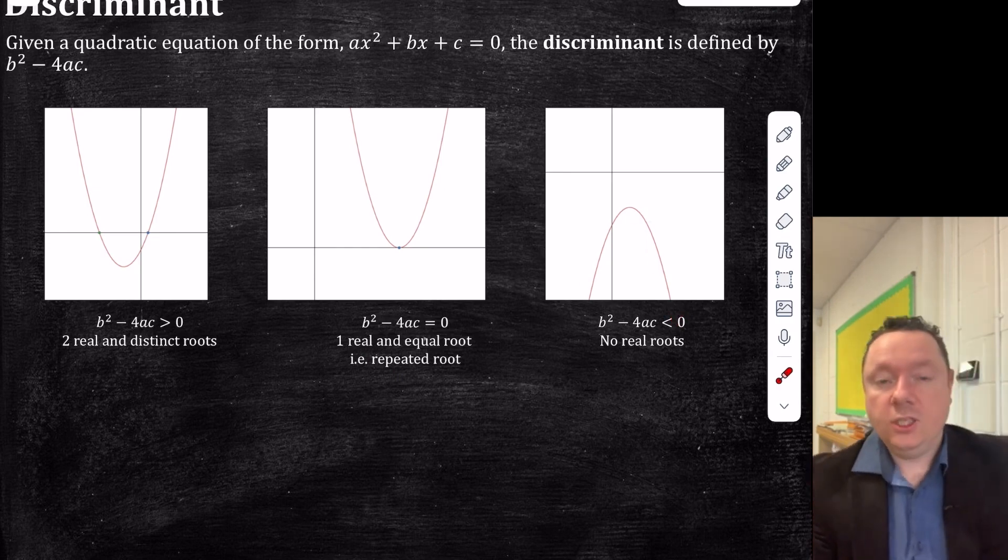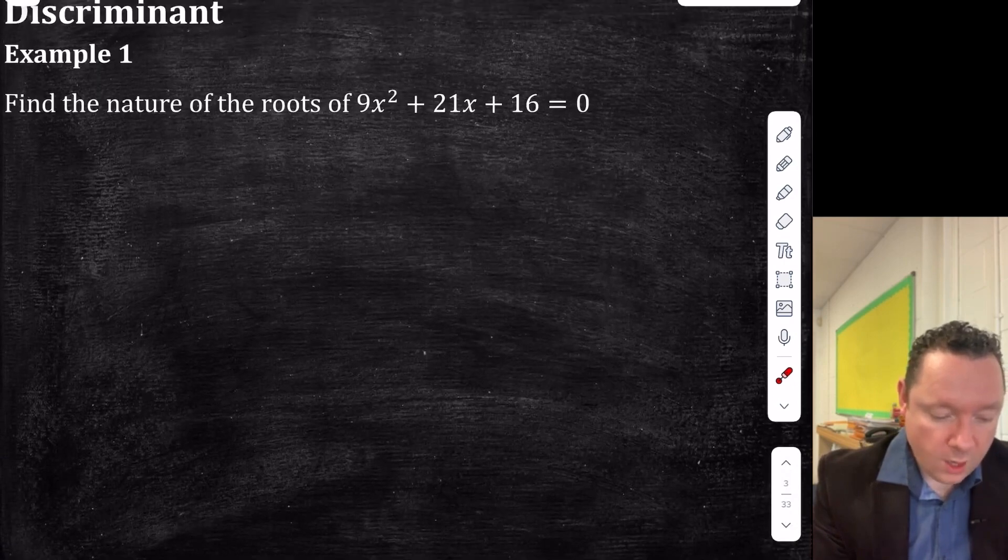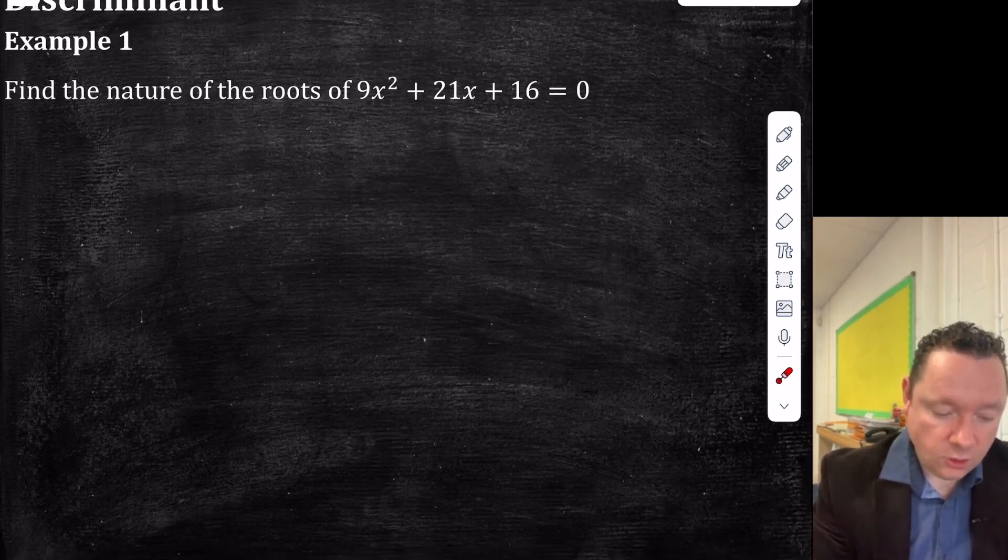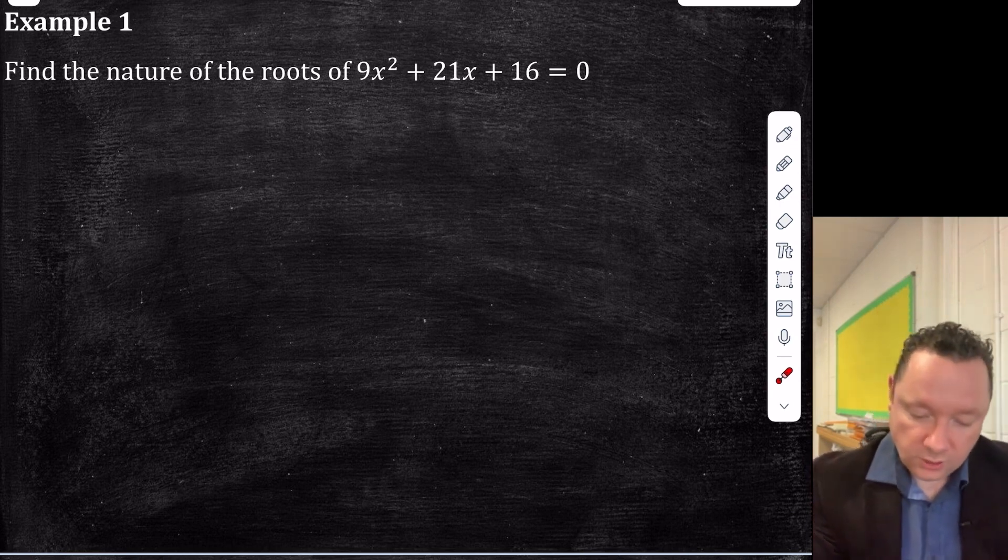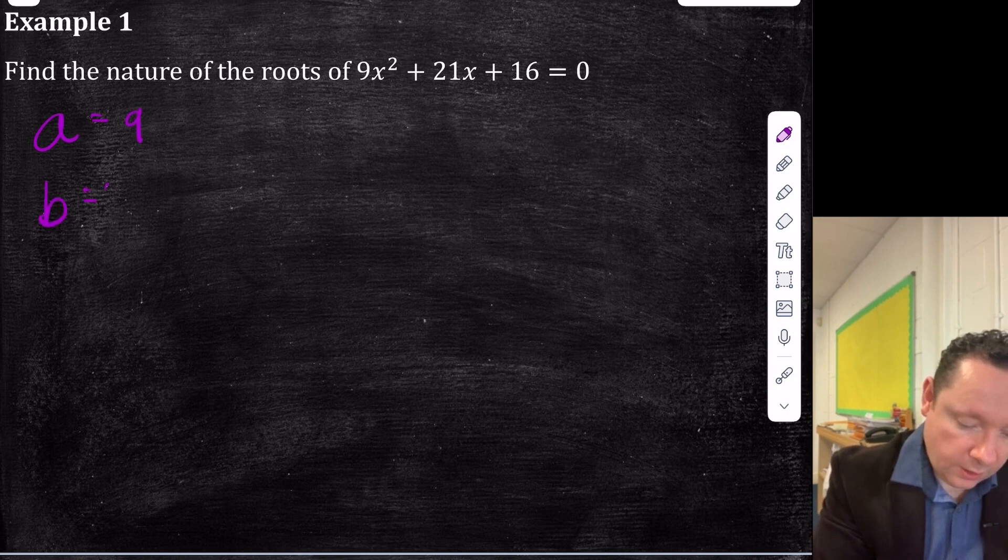And we can use this in a variety of problems. So here's an example one. It says find the nature of the roots of 9x squared plus 21x plus 16 equals zero. So a is equal to 9, b is equal to 21, and c is equal to 16.